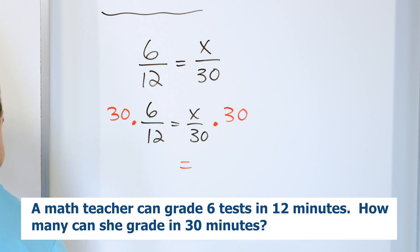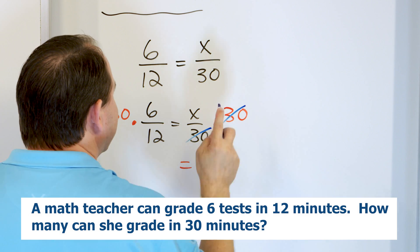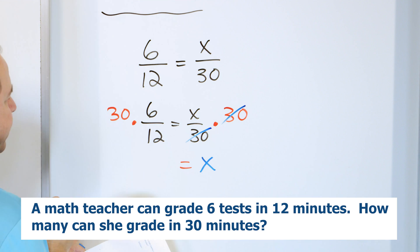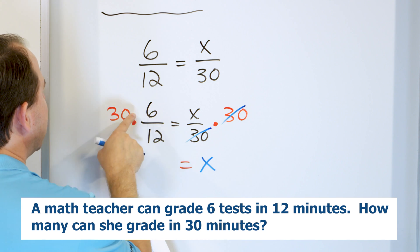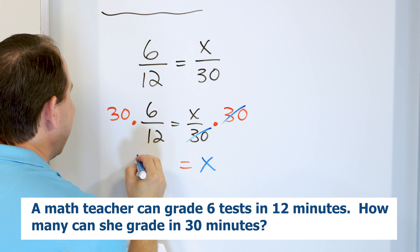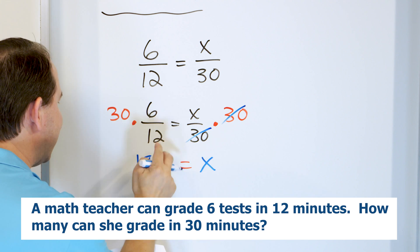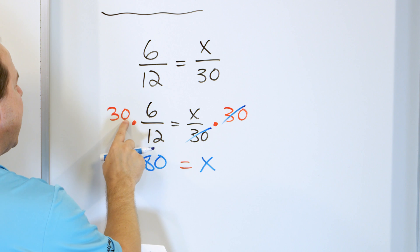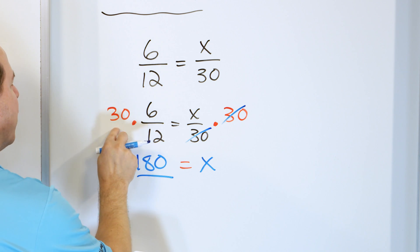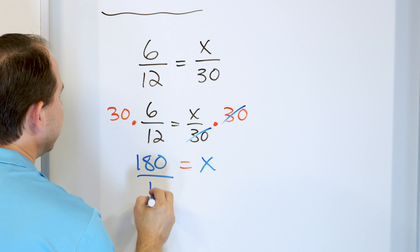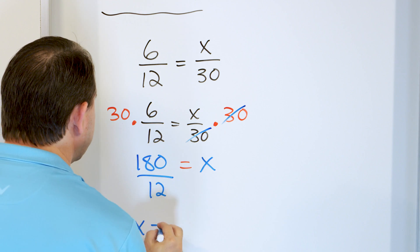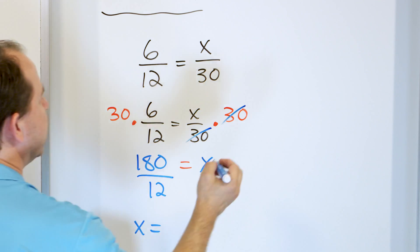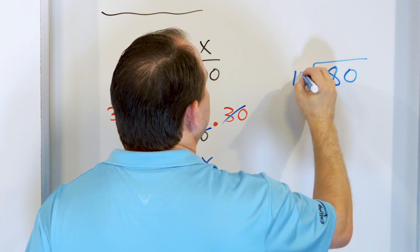On the right-hand side, the 30 will cancel. All we have left is x. Here we have 30 times 6 on the numerator. And 3 times 6 is 18. And we can take the zero and add it back to the end. Remember, all we're doing when we multiply by 30 is we're just pretending the zero is not here. 3 times 6 is 18. And then take that zero and stick it at the end. And then 12 times the invisible 1 here, because this is a fraction, over 1 is 12. So what is 180 divided by 12? Let's go over here and figure out. Divided by 12. This can only go one time.